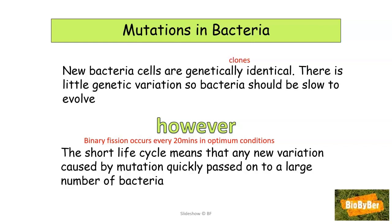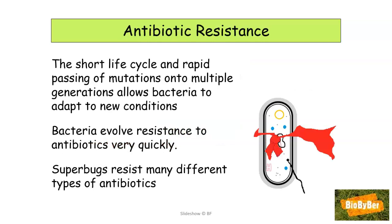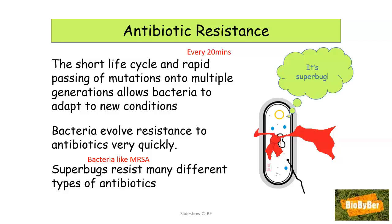Suppose a bacterial cell mutates during the process of DNA replication and is able to resist antibiotics. The short life cycle and the rapid passing of mutations across multiple generations — every 20 minutes — will allow the bacteria to adapt to antibiotics and survive. They will evolve resistance very quickly. Such bacteria are called superbugs. An example is MRSA, which can resist many different types of antibiotics, making it very difficult to eliminate.